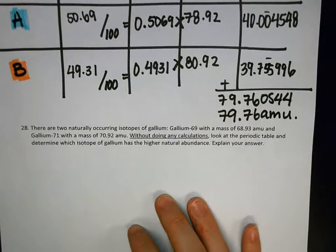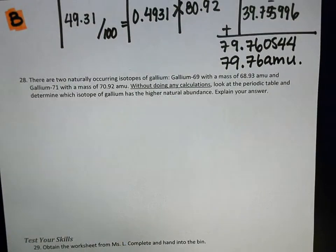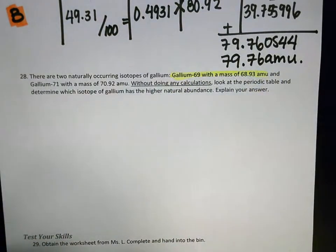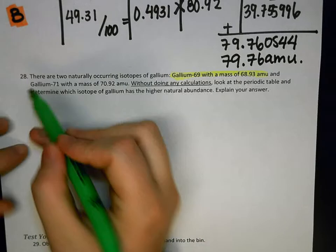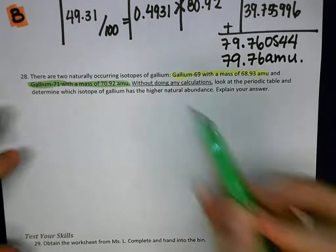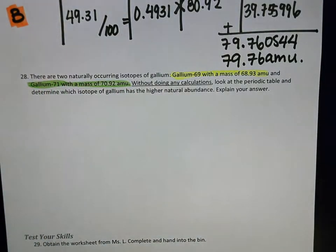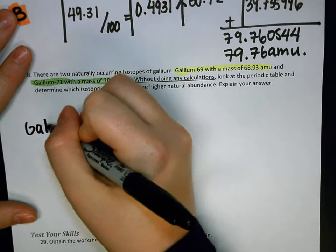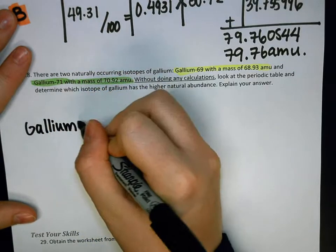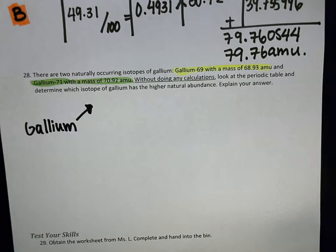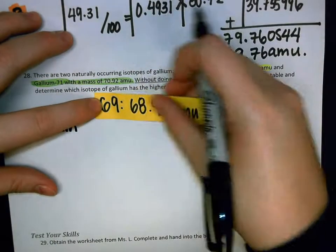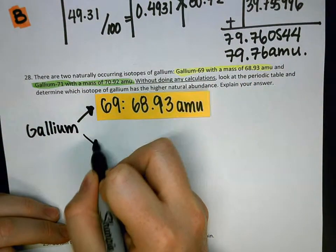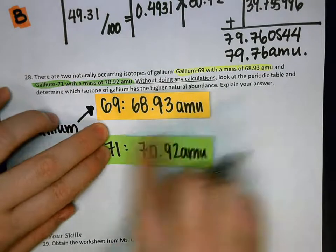Next problem, there are two naturally occurring isotopes of gallium. There is gallium-69, which has a mass of 68.93 AMU, and there is gallium-71, which has a mass of 70.92 AMU. Gallium, this element, has two isotopes. It comes in two flavors. The first kind of gallium is gallium-69, and it has this mass, 68.93 AMU. The other kind of gallium is going to be gallium-71, which has this mass.